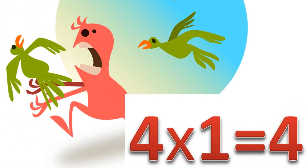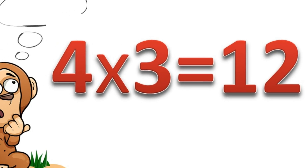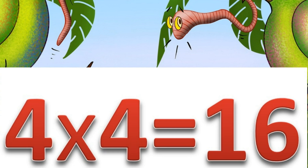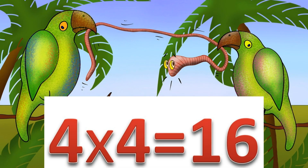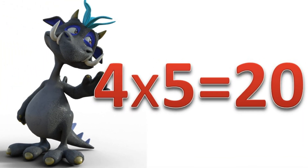Four times one: four. Four times two: eight. Four times three: twelve. Four times four: sixteen. Four times five: twenty.